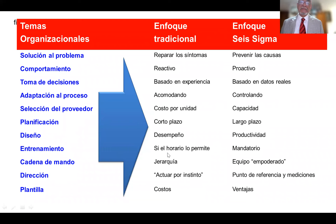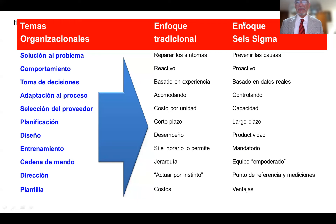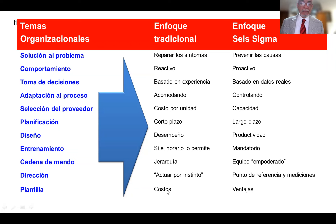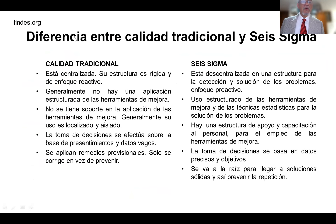El entrenamiento en el enfoque tradicional es si el horario lo permite; en seis sigma es obligatorio, mandatorio. La cadena de mando en el enfoque tradicional siempre está la jerarquía; en seis sigma se trabaja con equipos de alto desempeño, equipos empoderados que se manejan a sí mismos. La dirección en el enfoque tradicional implica actuar por instinto; en seis sigma es un punto de referencia basado en mediciones. En cuanto a la plantilla, el enfoque tradicional implica costos; en seis sigma tenemos ventajas. También se presenta un cuadro comparativo de la diferencia entre calidad total tradicional y seis sigma.